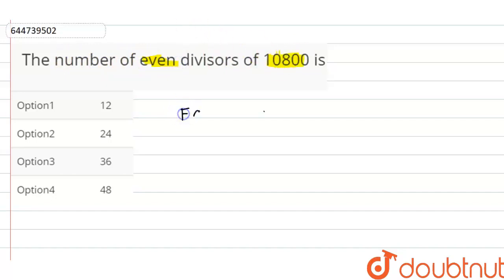First write factors of 10800 is equal to 2 to the power 4 times 3 to the power 3 times 5 to the power 2.